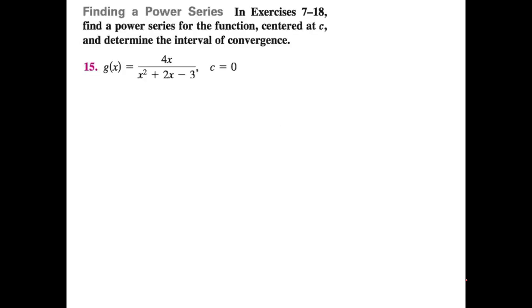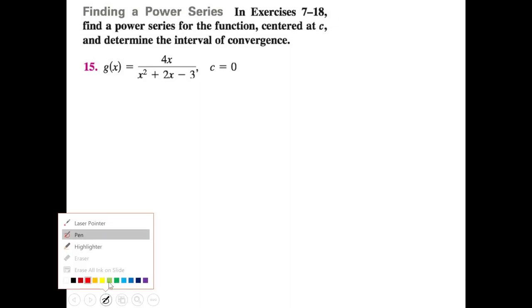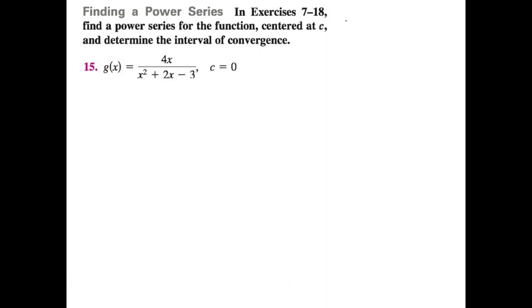We started in section 9.9, where we used the formula for a geometric series to create our own series. The formula is: a + a·r + a·r² + ··· converges to a/(1 - r). If we have expressions that look like this, we can back-substitute and get a series. But because of the squared terms, we might want to use partial fraction decomposition to get linear terms.